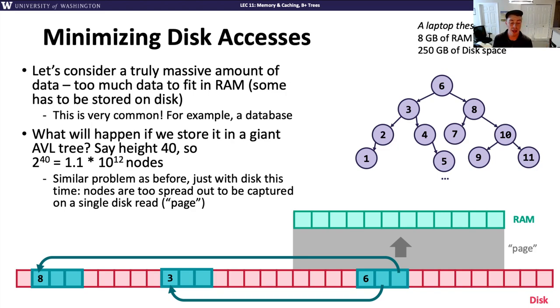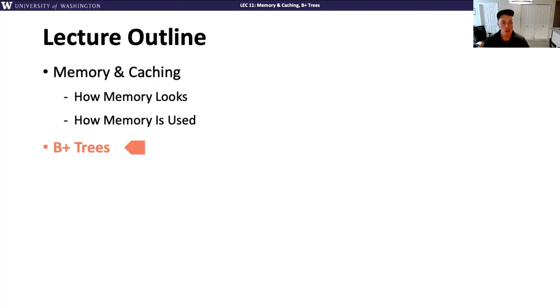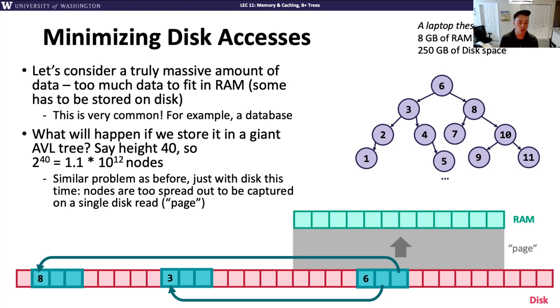You might get lucky and nearby nodes might be on that page, but most likely you won't. They might be stored somewhere else. That means you're going to have to go to disk every single time you want to access one of these nodes, because you're going to be missing the page every single time. This is going to cause a huge slowdown in your program. When we talked about those latency numbers, that disk seek took forever in comparison to what your CPU is doing. So your program will be so slow. This is truly bad.